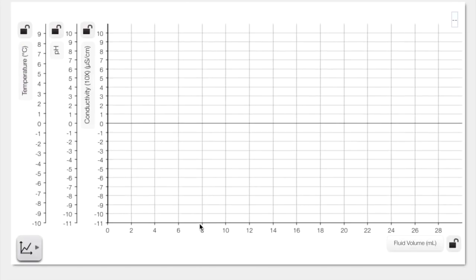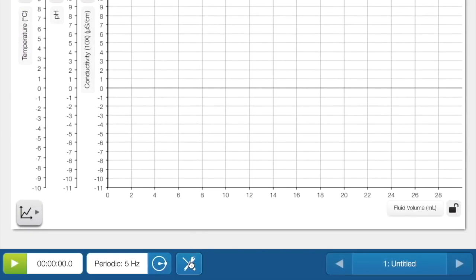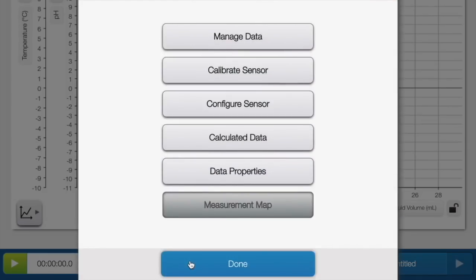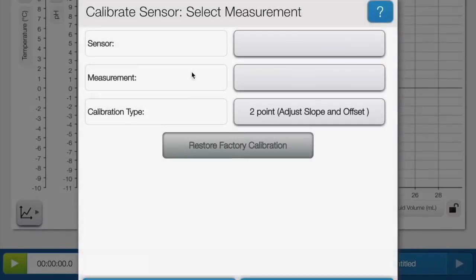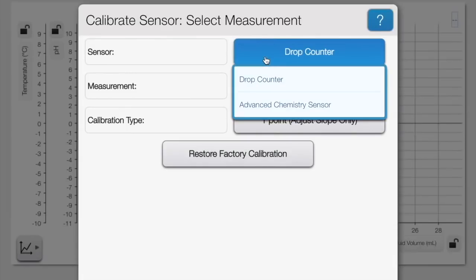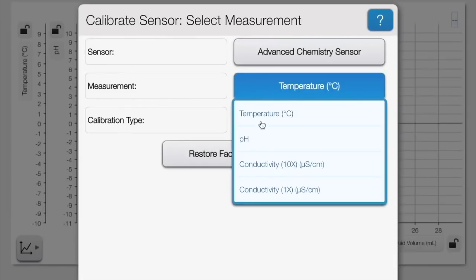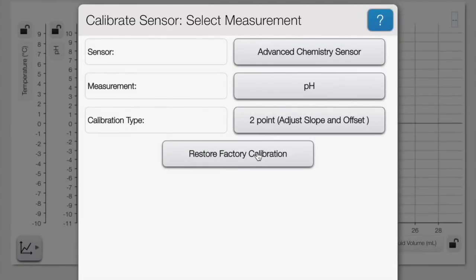Now you'll need to calibrate the pH sensor. This is done by clicking on the tools button and then pressing calibrate sensor. Choose the advanced chemistry sensor then pH then two-point calibration and then next.